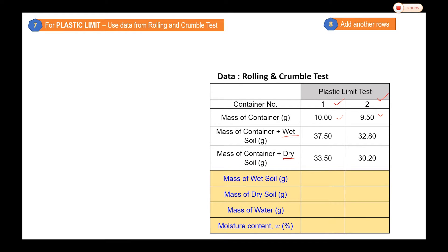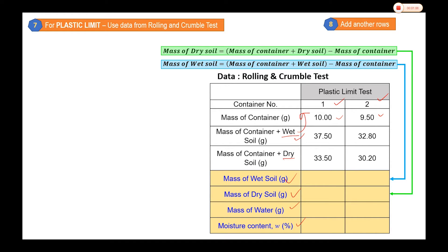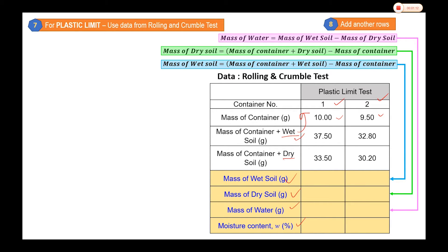We need to add additional rows to get the mass of the wet soil, mass of the dry soil, and mass of water. To get the mass of the wet soil, it is exactly the same as we do in the liquid limit — the mass of container plus wet soil minus the mass of the container.